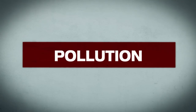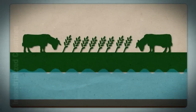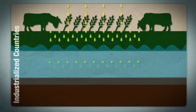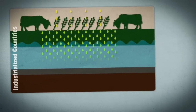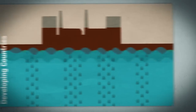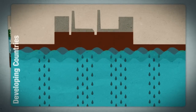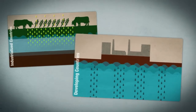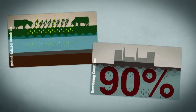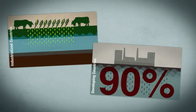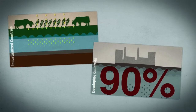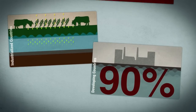In industrialized countries, the main problem is agriculture: groundwater quality can be reduced by inputting large quantities of pesticides and chemical fertilizers. In developing and emerging countries, the absence of wastewater management is usually critical — 90 percent of urban wastewater pours untreated into rivers, lakes, or the sea.